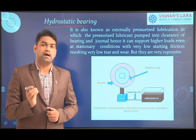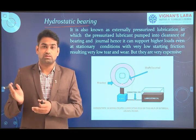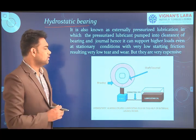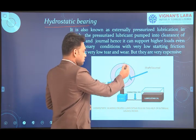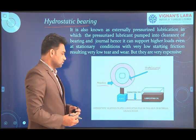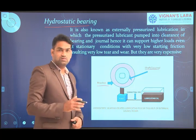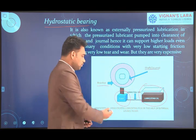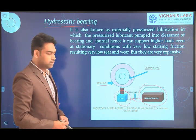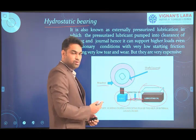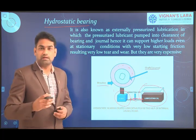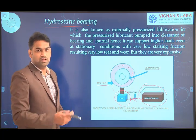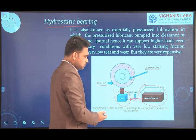In hydrostatic lubrication, the thick film is obtained by means of external pressure rather than journal rotation. Looking at the system, the outer circle represents the bearing and the inner circle represents the shaft or journal. A pump is connected to the lubricating sump, which receives lubricating oil from the tank. The pump pressurizes the lubricating oil before it enters the clearance between the two surfaces, forming a thick film even in the initial condition without rotating the journal.